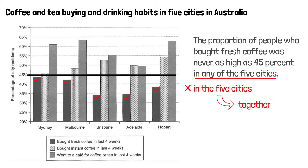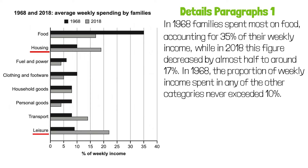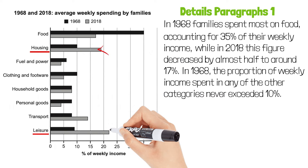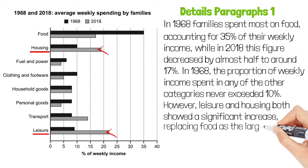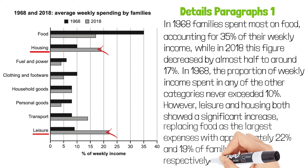Now let's go back to this chart — housing and leisure. The most important feature of these two categories is that in 2018, they became the biggest categories. Leisure and housing both showed a significant increase, replacing food as the largest expenses, with approximately 22% and 19% of family income respectively.